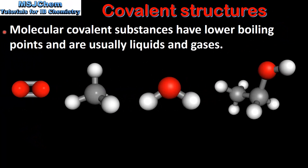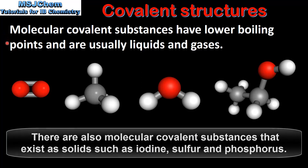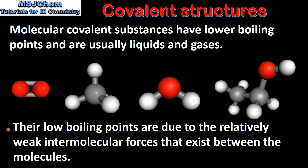We will start by looking at the boiling points of molecular covalent substances. Molecular covalent substances have lower boiling points and are usually liquids and gases. Molecular oxygen, methane, water, and ethanol are examples. Both molecular oxygen and methane exist as gases at room temperature, whereas water and ethanol exist as liquids. Their low boiling points are due to the relatively weak intermolecular forces that exist between the molecules. Molecular oxygen and methane have weaker intermolecular forces and are therefore gases, while water and ethanol have stronger intermolecular forces and are therefore liquids.